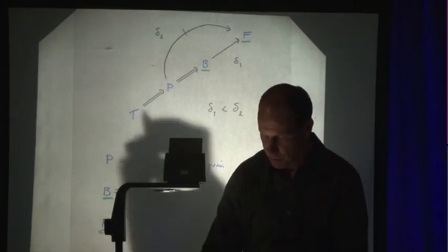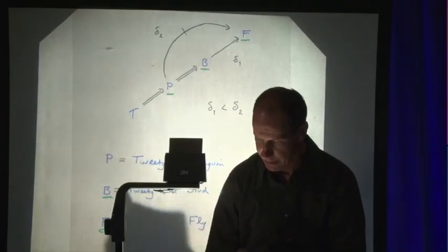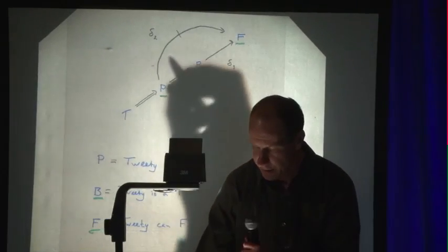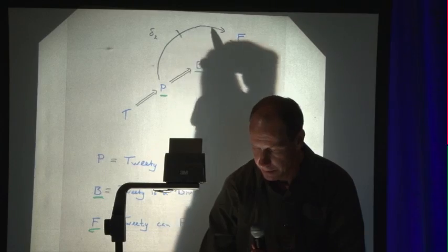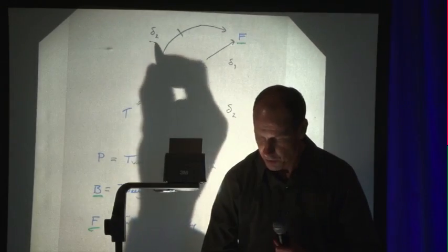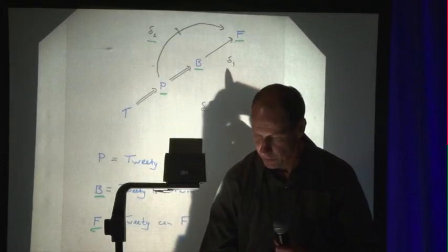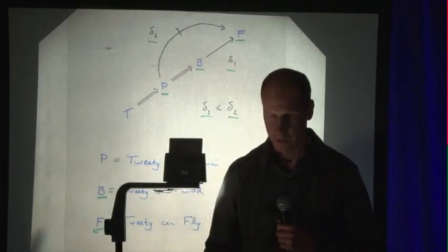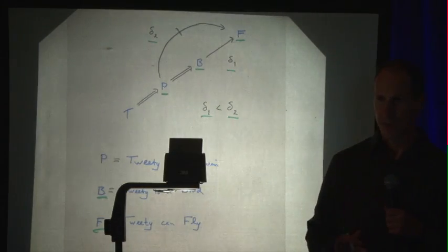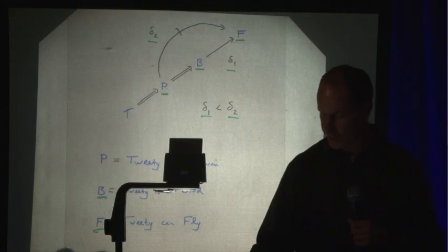But if I tell you something more, that Tweety's a penguin, in fact, that's a reason for thinking that Tweety can't fly. That's what this little negative arrow means. And this is a stronger reason. This reason or this default rule is stronger than this one. So you'll go ahead and withdraw the original conclusion and conclude instead that Tweety can't fly. This is a very standard example in AI. When I showed it to Wendell, and he said, yes, we study this.